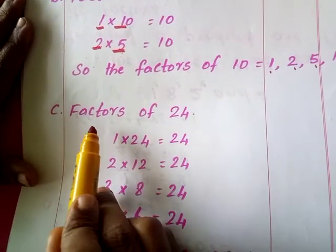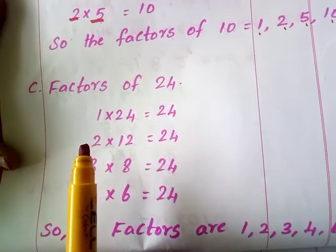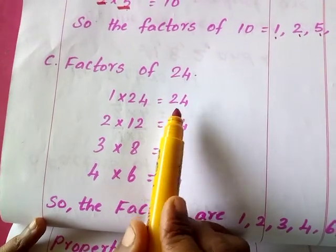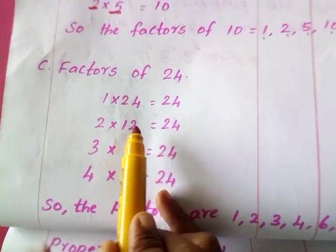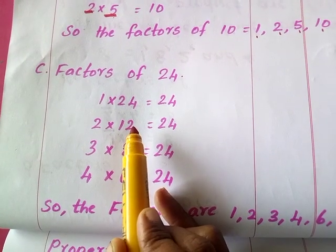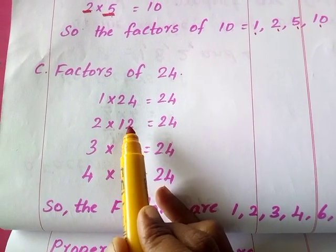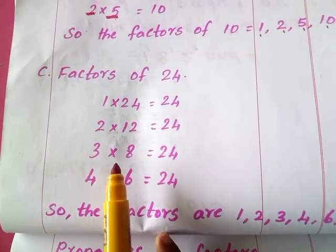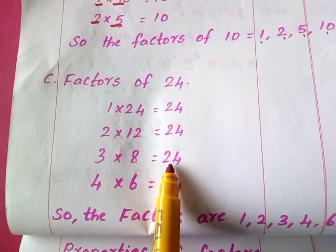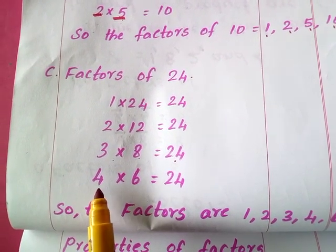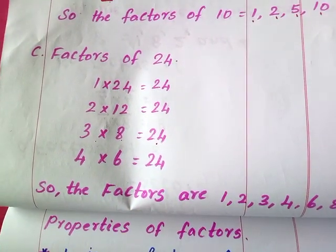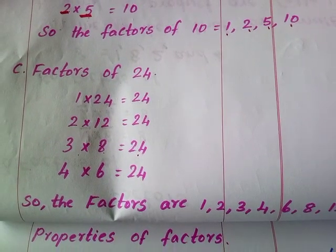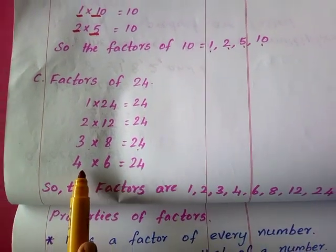Then next we have factors of 24. To find factors of 24 I must start from the table of 1. 1 into 24 is 24. Then in the 2's table, 2 into 12. We will check up to 10 but go beyond that also — 11, 12, 13 — just check in the 2's table. So 2 into 12 is equal to 24. Then the third table: 3 eights are 24. Fourth table: 4 into 6 is 24. Fifth table when I go it is more than 24, it is 25, so we can't take the fifth table.